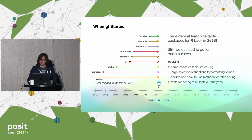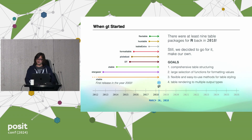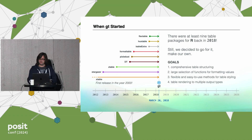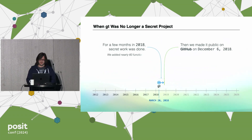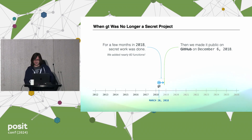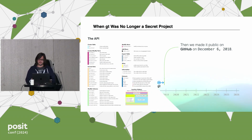We had some goals. These are the main goals I had before even starting. One: comprehensive table structuring. Two: a large selection of functions for formatting values. Three: flexible and easy-to-use methods for table styling. Four: table rendering that goes to multiple output types. In secret, I worked on GT for most of 2018, added nearly 60 functions hitting on those goals, and made it public December 6th — just before RStudio Conf. It was pretty good at that time.